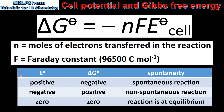Here we have the relationship between the cell potential, the Gibbs free energy, and the spontaneity of a reaction. If the cell potential is positive, the change in Gibbs free energy will be negative and the reaction will be spontaneous.